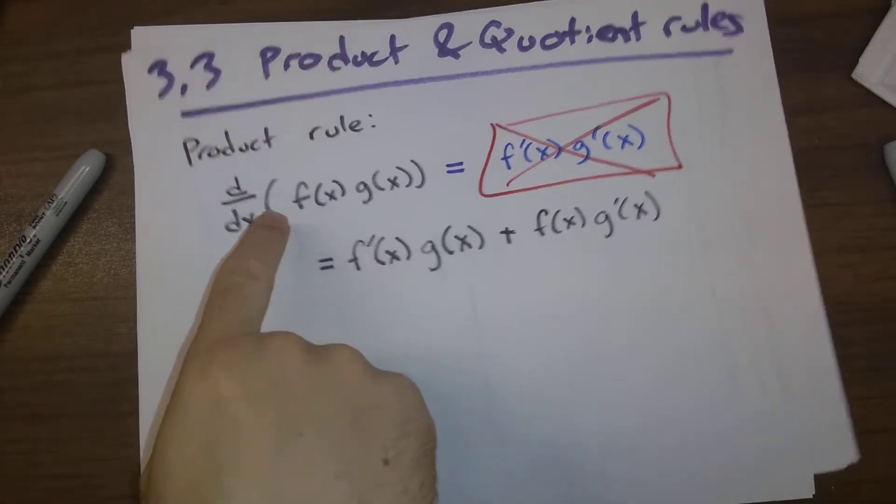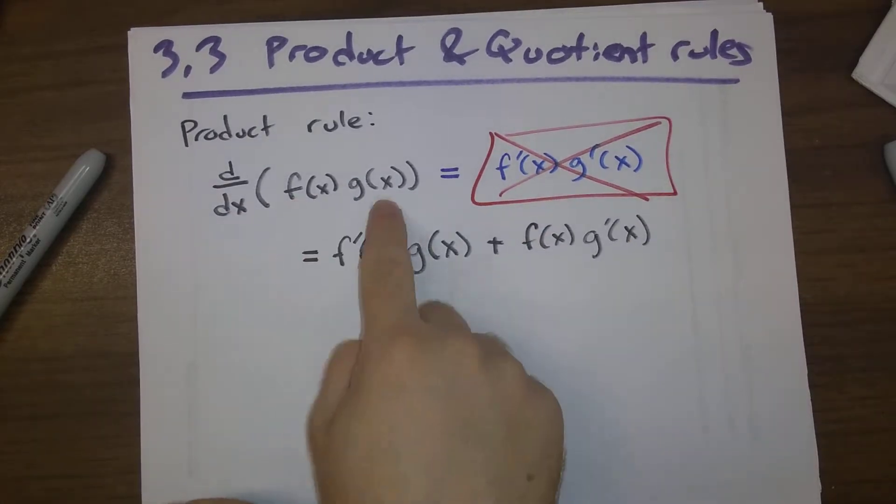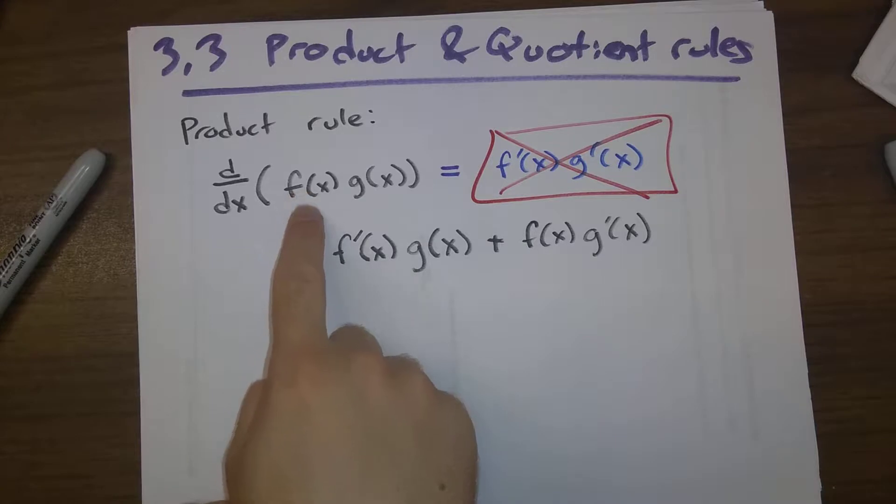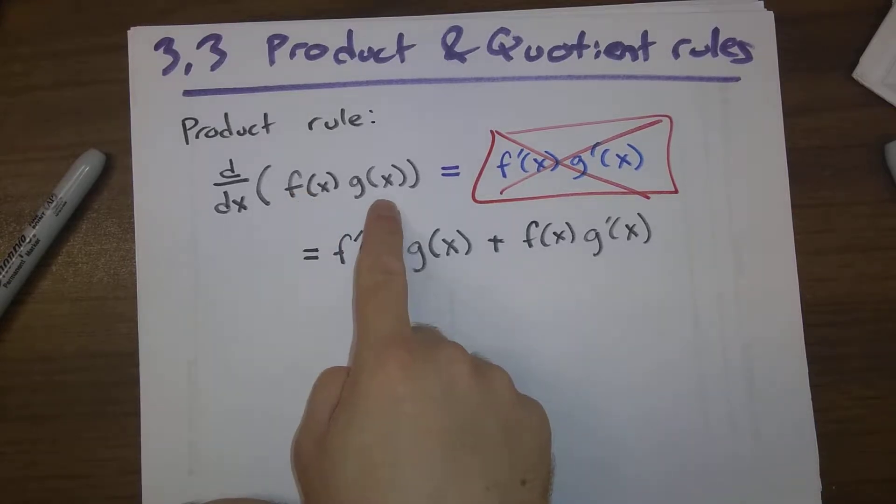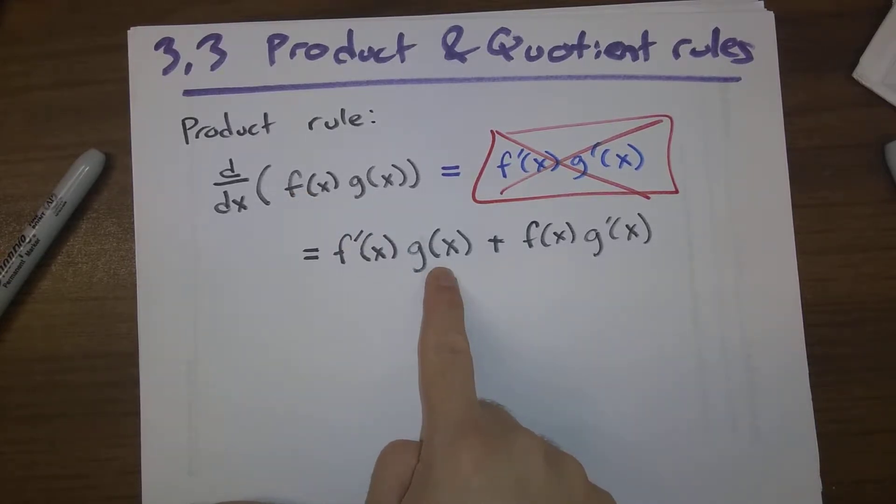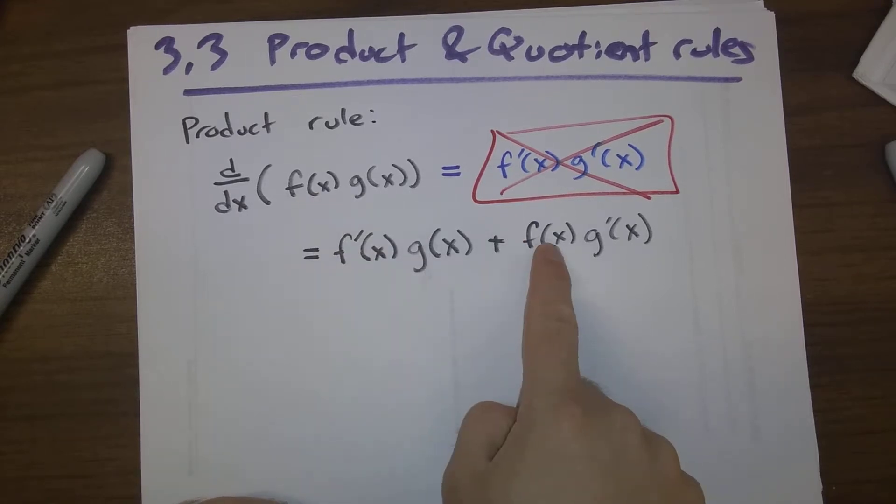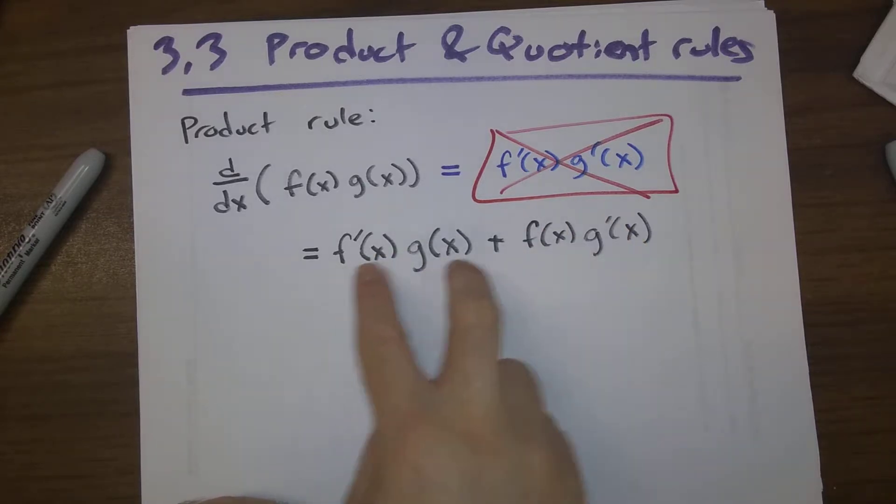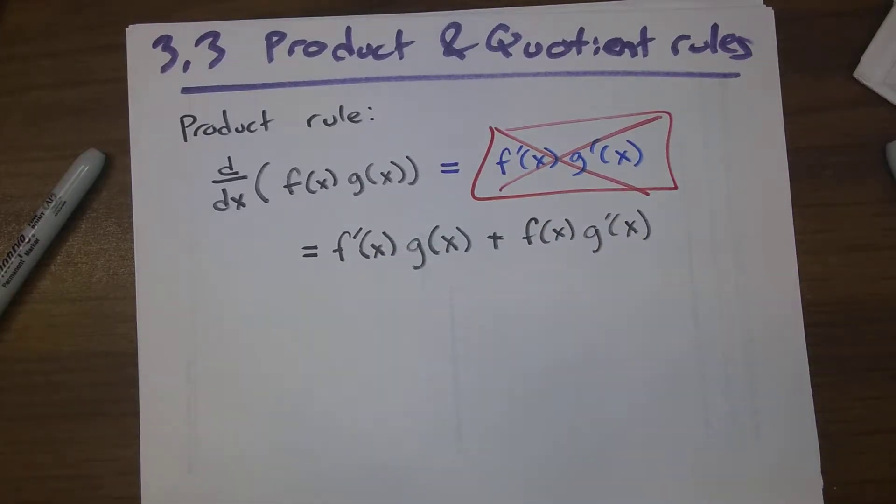In order to take the derivative of a product of two functions, what you do is take the derivative of the first function, leave the second alone, multiply those together, leave the first function alone, multiply it by the derivative of the second function. You have these two terms, add them together, that is the product rule.